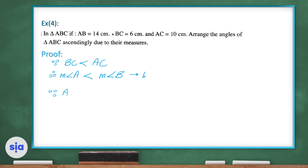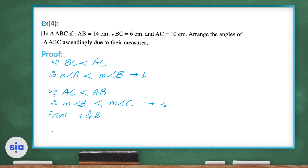Since AC is less than AB, therefore the measure of angle B is less than the measure of angle C — call this inequality number 2. From inequalities 1 and 2, the ascending order is: angle A < angle B < angle C.